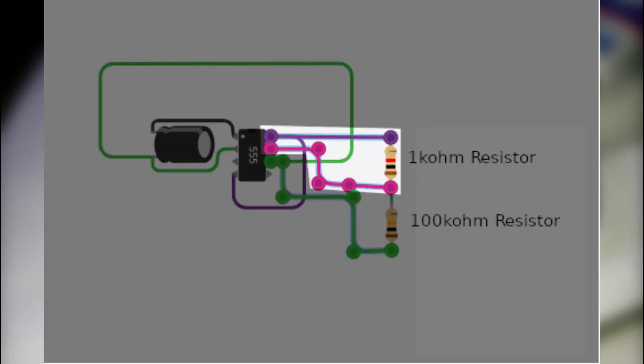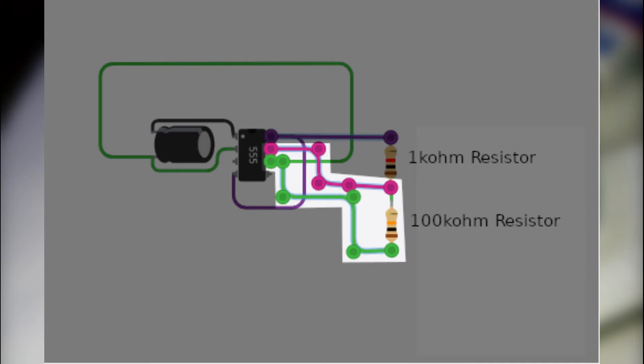Now take the 1k ohm and 100k ohm resistors. Connect the 1k ohm resistor across pin 8 and pin 7 of the 555 IC. Connect the 100k ohm resistor across pin 7 and pin 6 of the 555 IC.